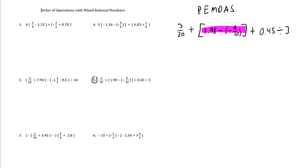1.98 subtract a negative 9/10 becomes 1.98 plus a positive 9/10. And 9/10 as a decimal is just written like this, 0.9. So let's go ahead and add those two together.